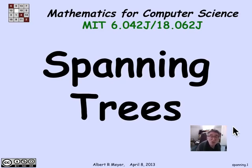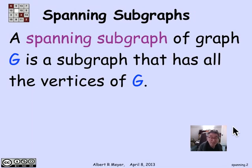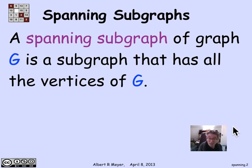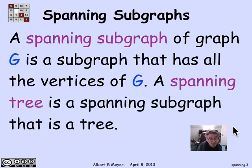One of the multiple definitions of trees is that it's a minimum edge simple graph that connects up a bunch of vertices. That leads to the idea of finding a spanning tree within a simple graph that maintains the same connection. A spanning subgraph of a graph G is a subgraph that has all the vertices of G. A subgraph means it has a subset of the vertices and a subset of the edges. A spanning subgraph has all of the vertices but a subset of the edges. And a spanning tree is a spanning subgraph that is a tree.